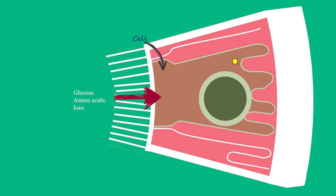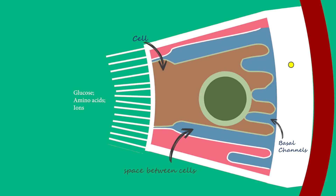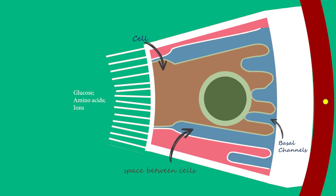These substances are actively transported out of the cells into the spaces between them and the basal channels. This is done by carrier proteins in the cell surface membranes. Once in these spaces and channels, they enter the extremely permeable blood capillaries by diffusion and are carried away from the nephron.